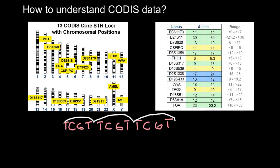We need more loci in order to increase the power of exclusion. Also, when biological material is present in very small quantities or is greatly degraded, some of the loci can be lost when we run a gel. That decreases the power of exclusion, so in order to keep those numbers very high, we increase the number of loci. Even if we lose 5 loci out of 20, that is not as critical as losing 5 loci out of 13.